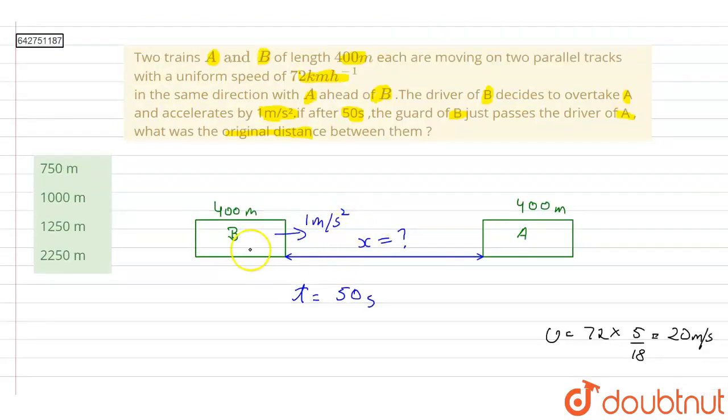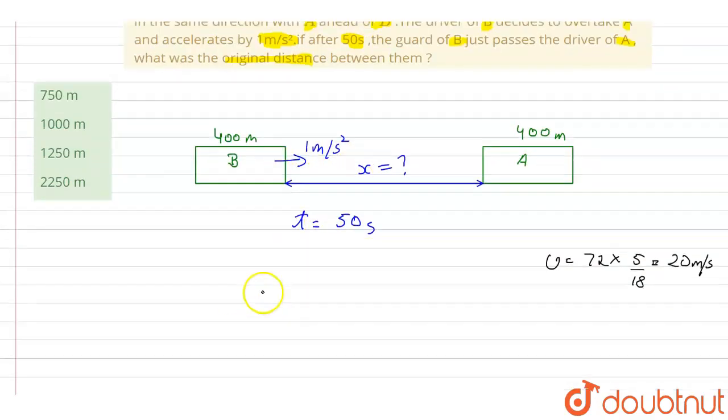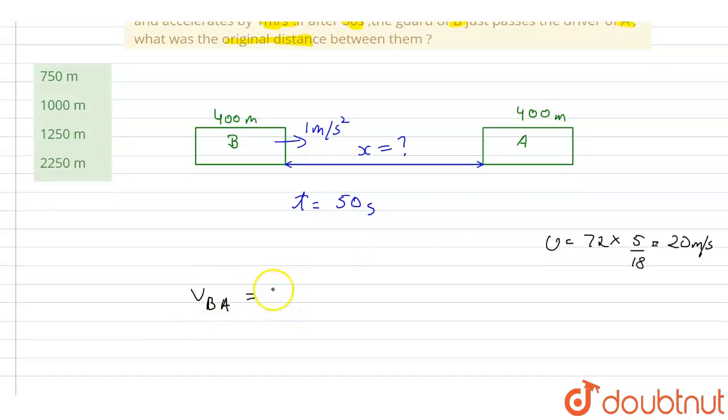Now we can solve this question with the concept of relative velocity, and we can treat this problem as motion in one dimension, so consideration of vectors need not be taken. Let's say that vBA, that is velocity of train B with respect to train A, that will be equal to...